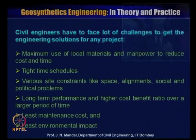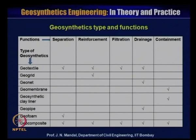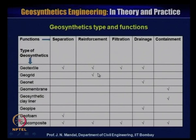A summary slide shows geosynthetics types and their functions. Geotextile acts as separation, reinforcement, filtration, and drainage. Geogrid acts as reinforcement. Geonet acts as drainage and containment. Geomembrane acts as containment. Geosynthetic clay liner is an alternative to geomembrane, functioning as containment. Geopipe acts as drainage. Geofoam acts as separation. Geocomposite acts as separation, reinforcement, filtration, drainage, and containment.